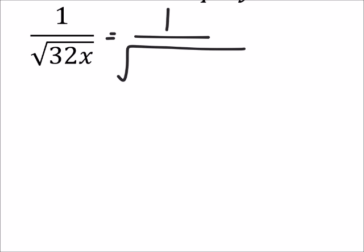Let's make this 1 over, but we're going to split up that 32x. So 32 can split up into 4 and 8, which would be split up into 4 and 2. This gives me 4 times 4 times 2.